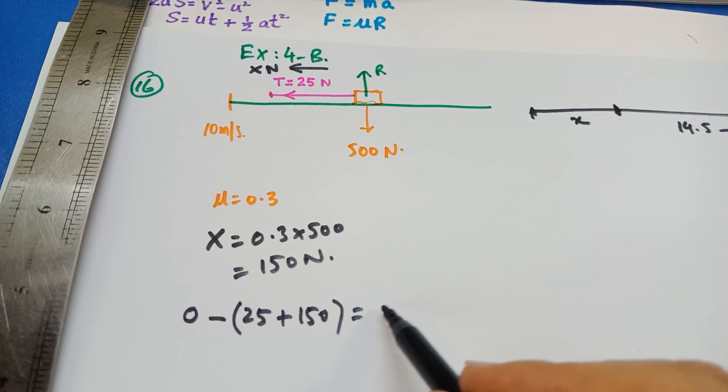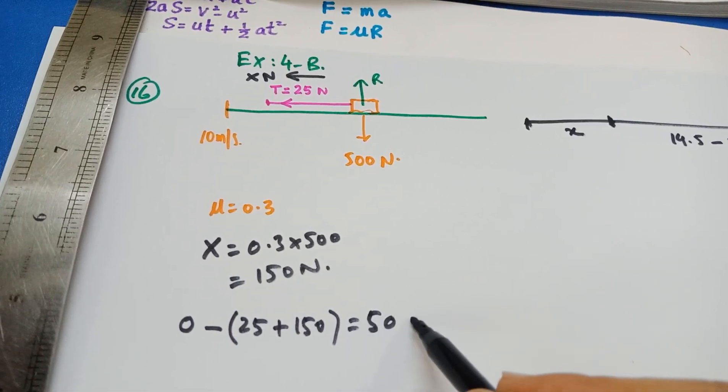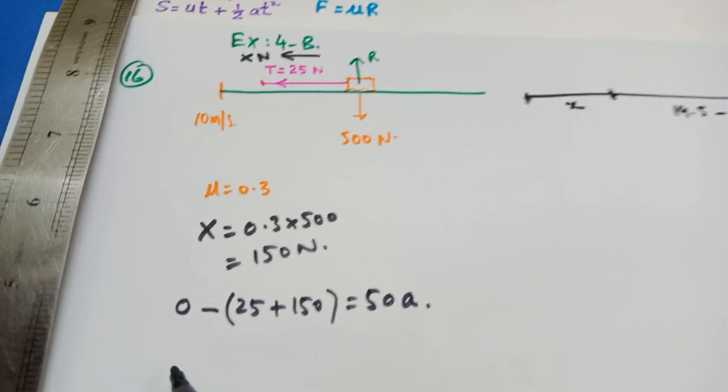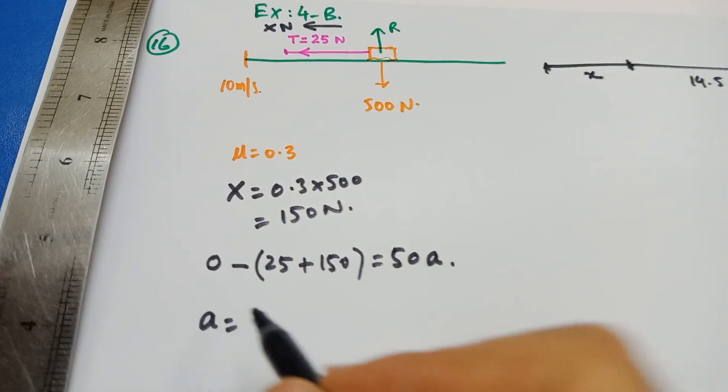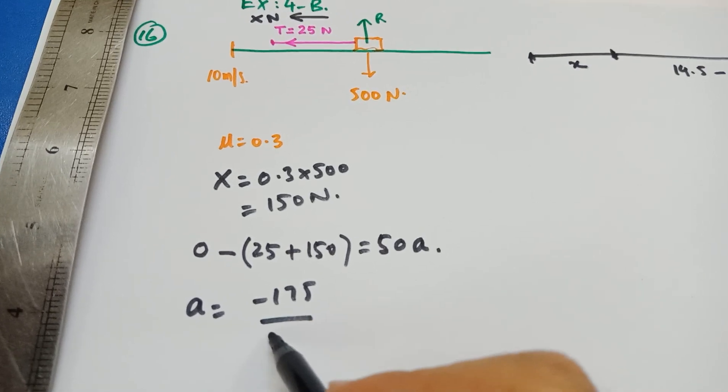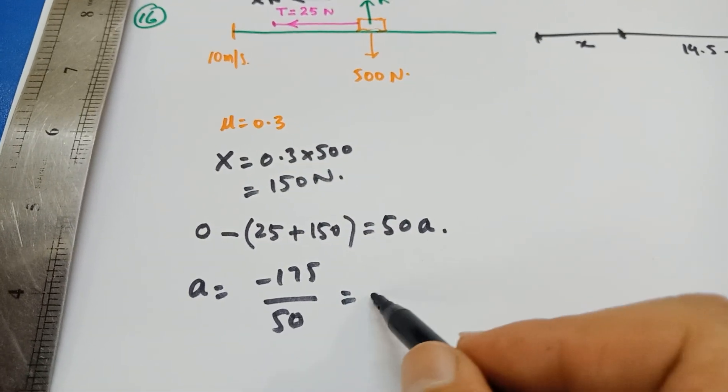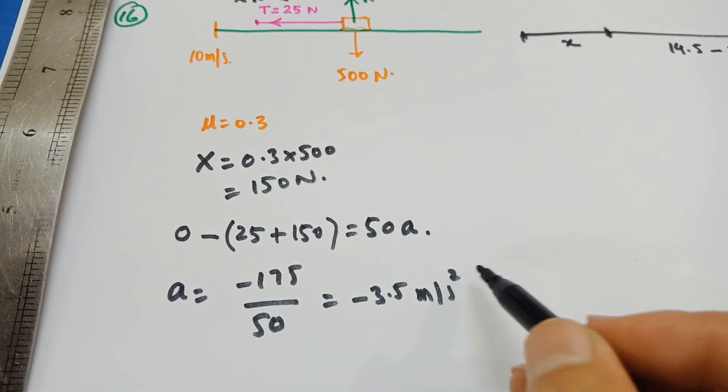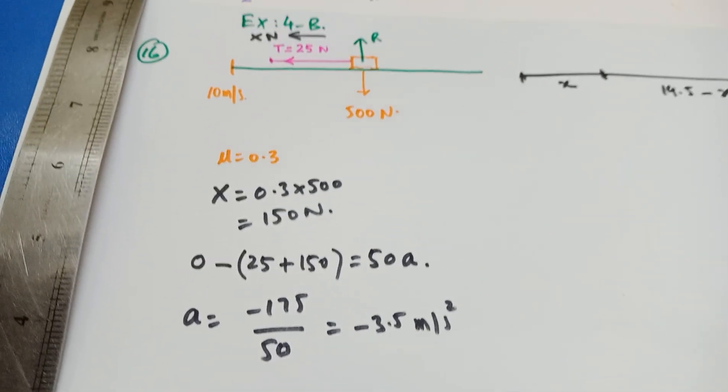And that is equal to Ma. This is going to be 50A. So this A is going to be minus 175 divided by 50. I think this is minus 3.5 meter per second square.